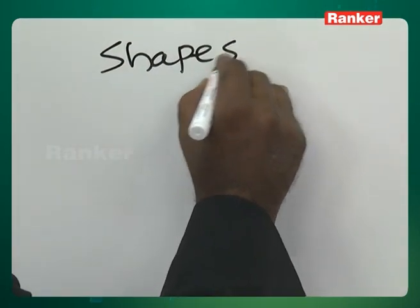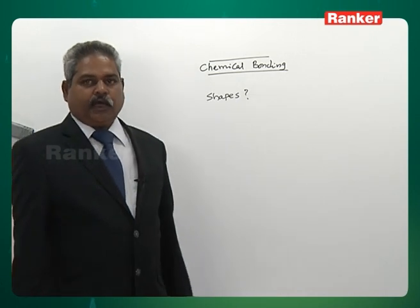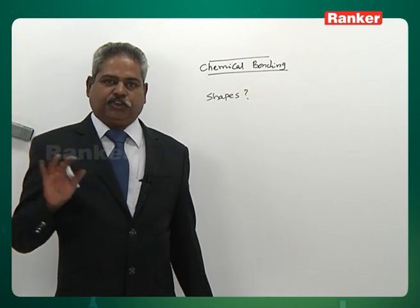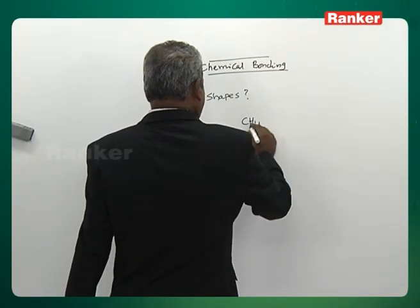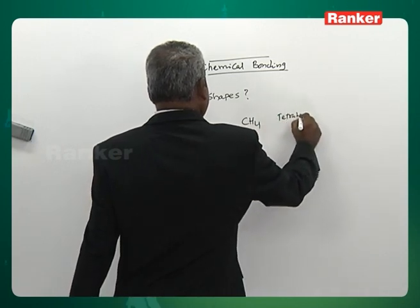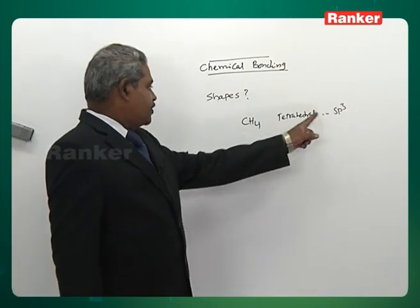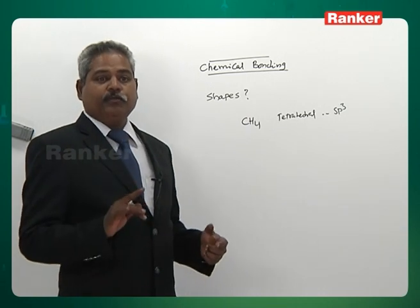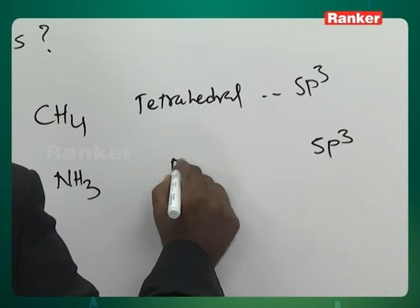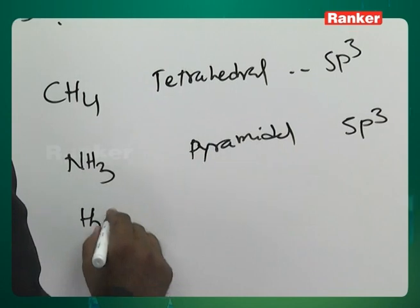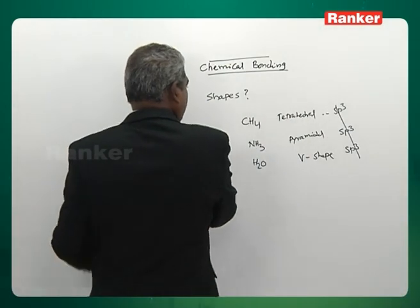Shapes of molecules: we have a tendency to invoke hybridization while discussing shape, but hybridization and shape are mutually exclusive — they have nothing in common. Ammonia is sp3 hybridized but has a pyramidal shape; H2O is also sp3 but has a V-shape. Hybridization has nothing to do with shape. Don't confuse the ideas.